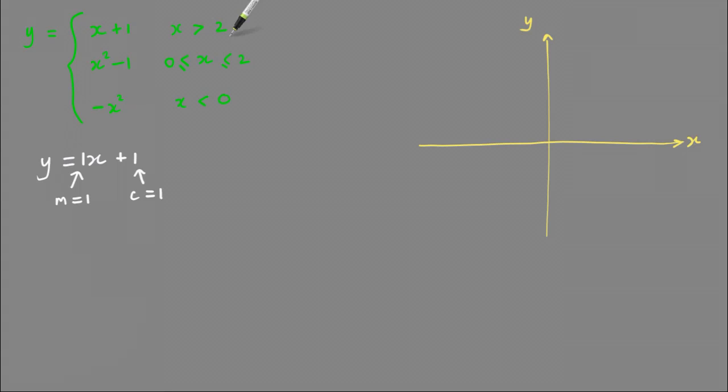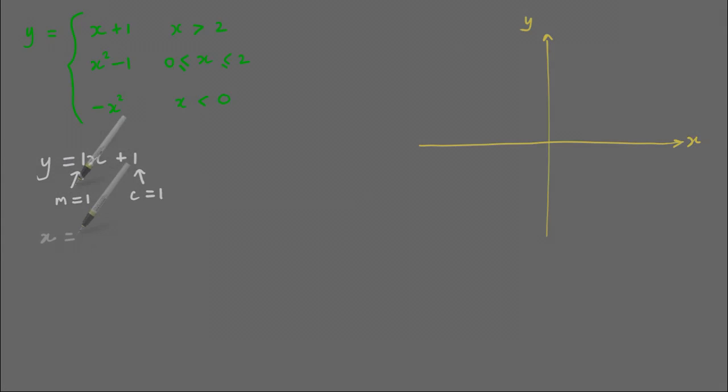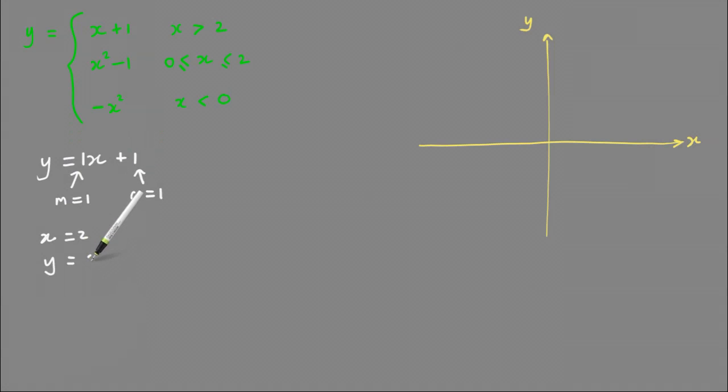When x is 2, y is going to equal 2 plus 1, and that equals 3. Therefore, the left endpoint of that straight line is going to be 2 comma 3.